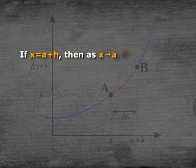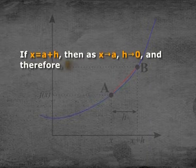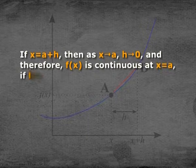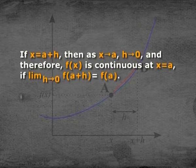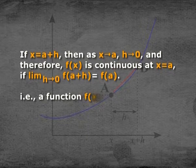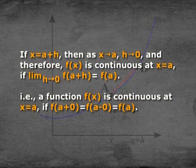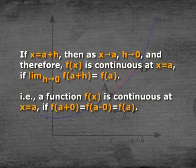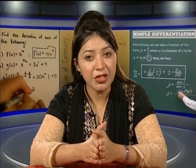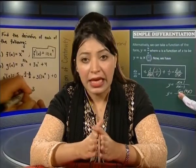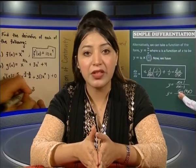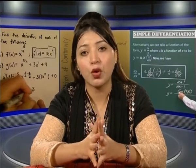If x = a + h, then as x→a, h→0, and therefore f(x) is continuous at x = a if limit h→0 of f(a + h) equals f(a). That is, a function f(x) is continuous at x = a if f(a + 0) = f(a − 0) = f(a). The function is said to be continuous in an open or closed interval if it is continuous at every point of the interval.